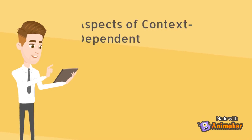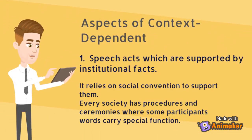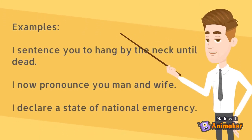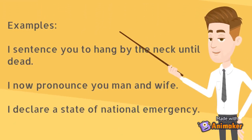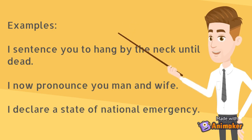There are two aspects of context dependence. The first is that many speech acts rely on social conventions to support them — the speech act is supported by institutional facts. Examples commonly used in the literature include a judge saying, 'I sentence you to hang by the neck until dead,' a priest in the marriage ceremony saying, 'I now pronounce you man and wife,' or a country's president announcing, 'I declare a state of national emergency.' These speech acts can only be performed by the relevant people in the right situations, where both are sanctioned by social laws and conventions.